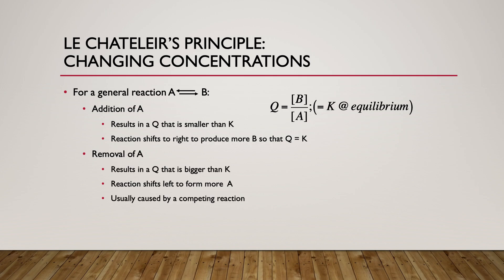The opposite occurs when we remove a reactant or product, usually via a competing reaction. For instance, if A is an acid and we add hydroxide, the acid reacts with the base, effectively removing A from the equilibrium. A's concentration gets smaller, Q gets bigger, and the reaction goes backward. Anything that removes a reactant or product causes the reaction to shift toward whatever is being removed — always trying to reestablish the original balance.